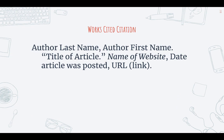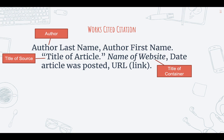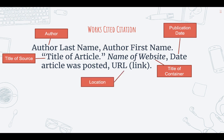Here's a works cited citation format for an article found on a website. You start with the author's last name, then a comma, then the author's first name. Next up, you have the title of the article itself — this is the title of the source. Then you put the name of the website — this is the title of the container, in other words, where the article is contained on this website. Then you have the date the article was posted — this is the publication date. And finally, you have the URL, which is the link to the actual article and the location where the article can be found.